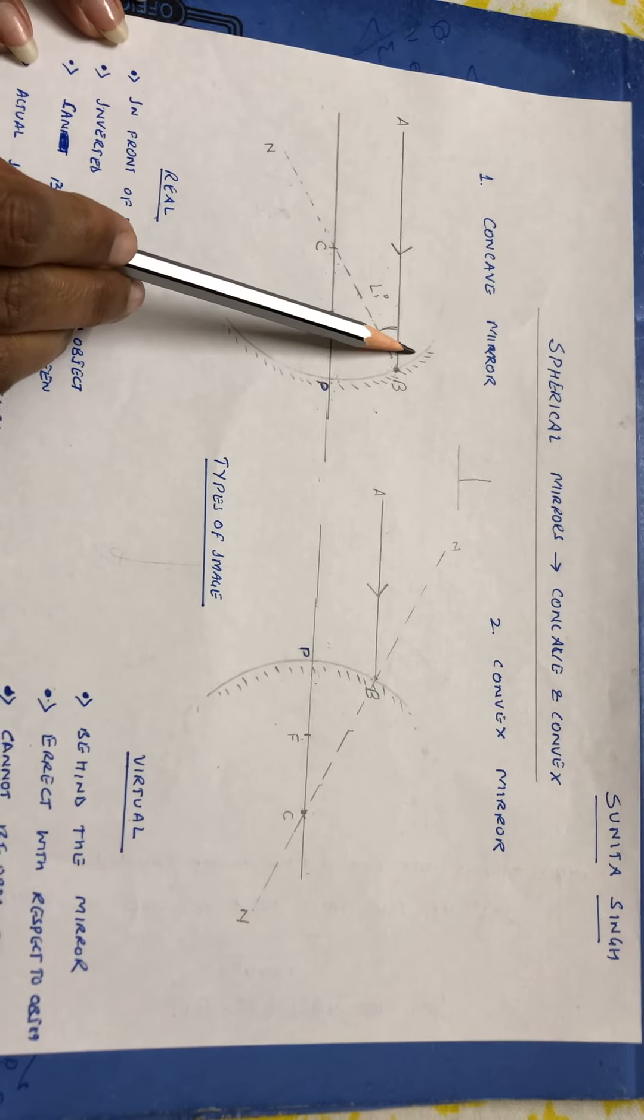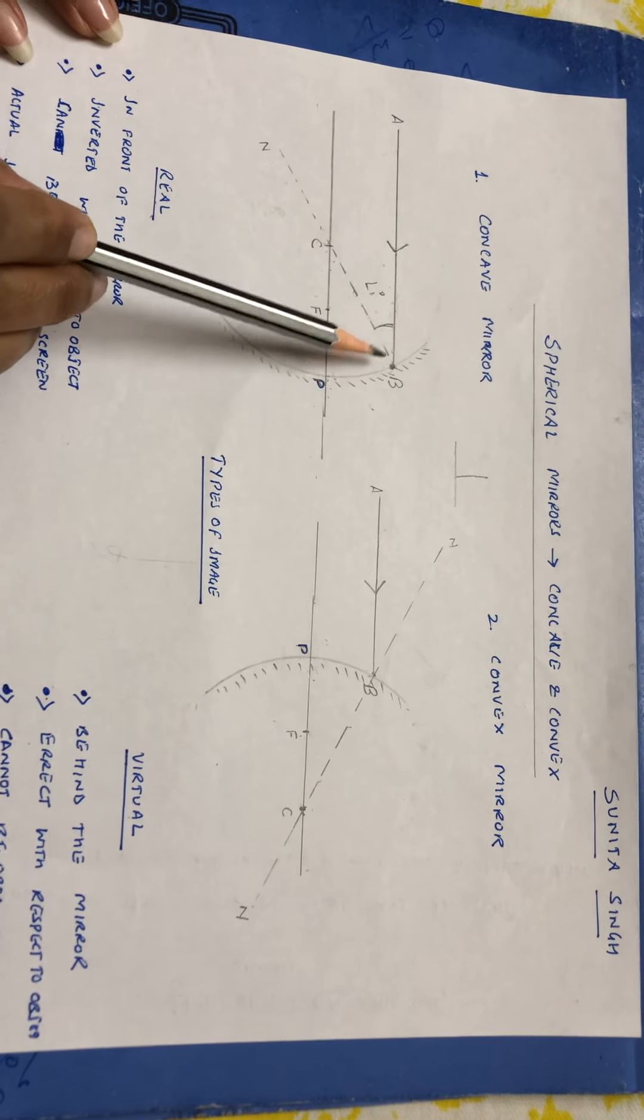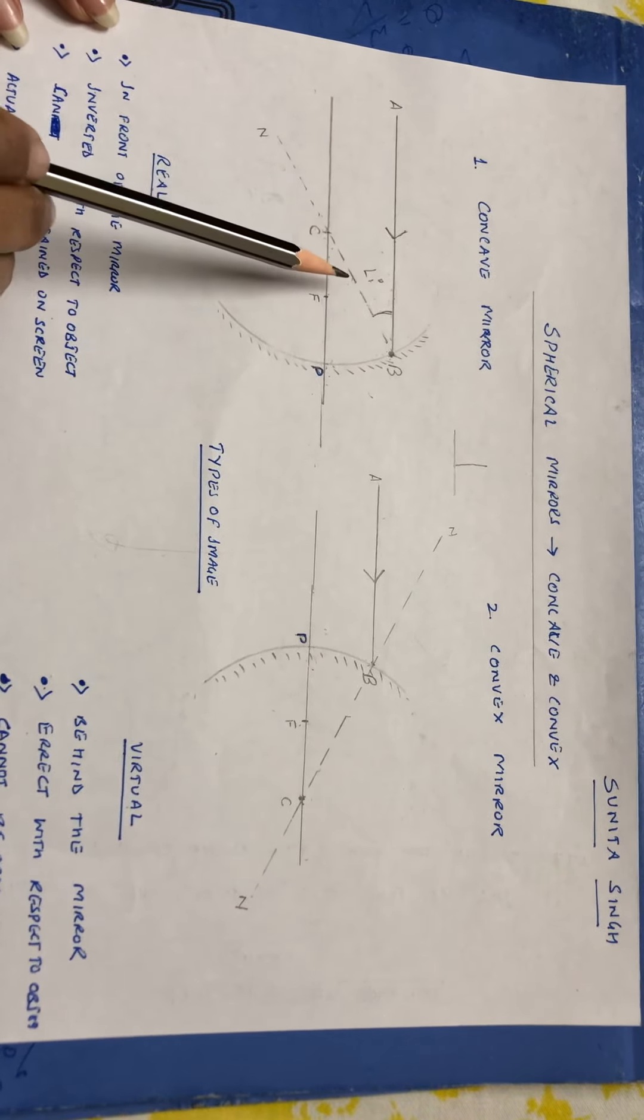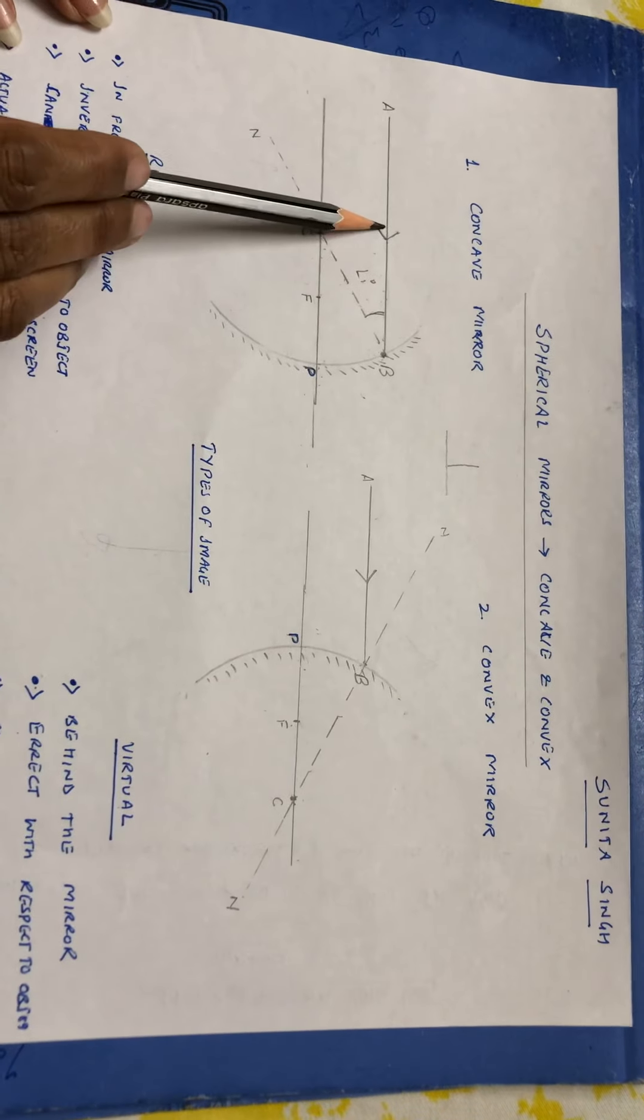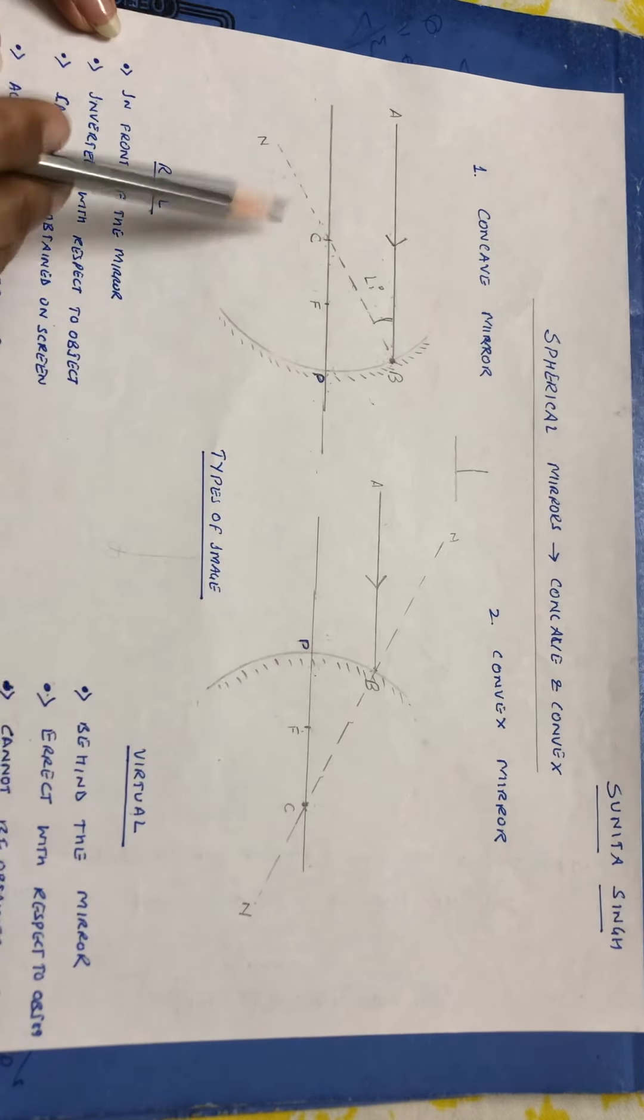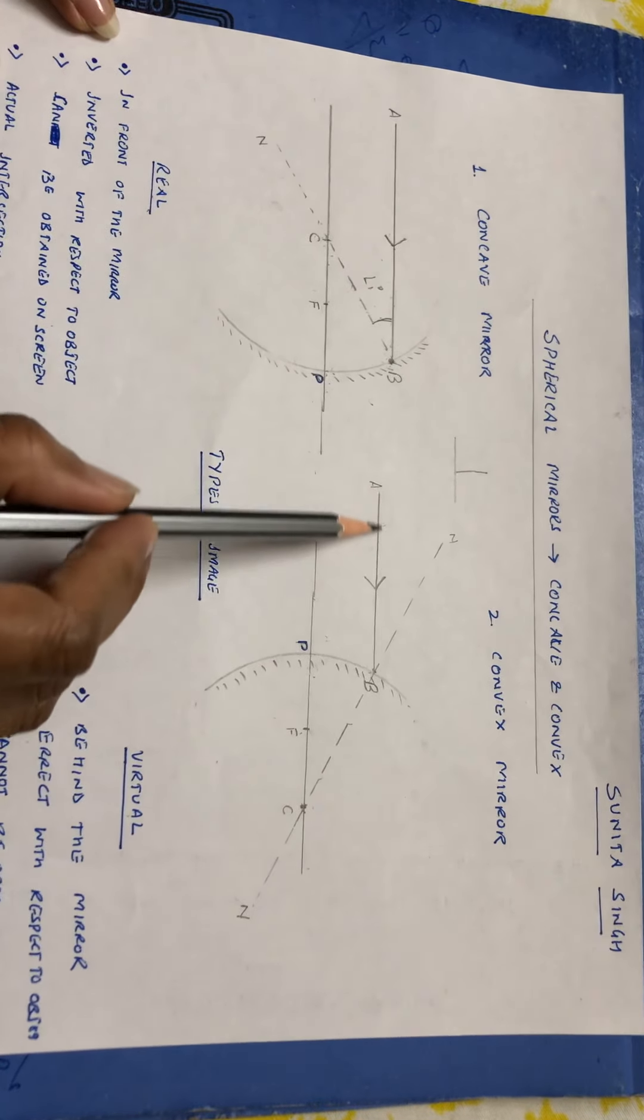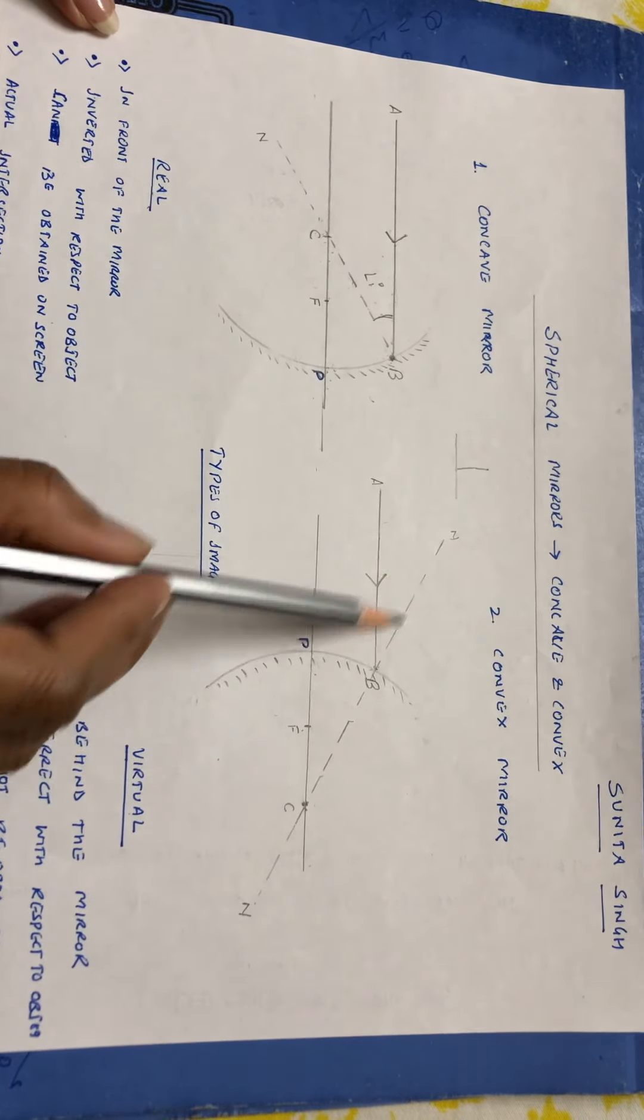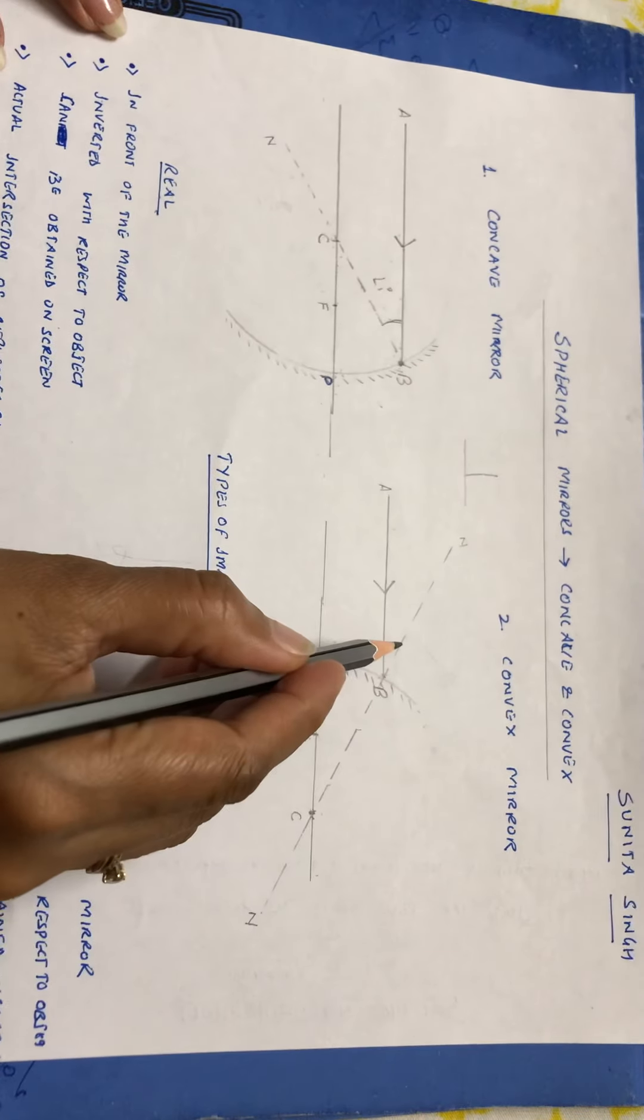The angle between the incident ray and the normal is angle i. Because there are angles here also. There are angles here as well. So how will we know which one is angle i? Very easy. Always the angle between the incident ray and normal will be angle i. Now let us see here. Here this is our incident ray, and this is the normal. So this is angle i.